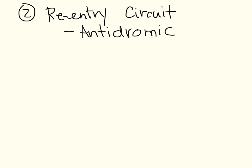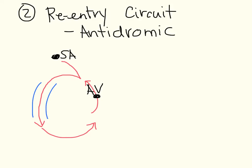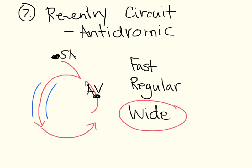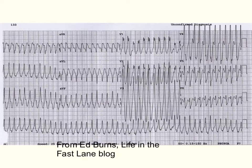The second, less common form is antidromic conduction, where the accessory pathway conducts the normal way and then goes up through the AV node. The rate would still be fast since there is still a circuit going around. It would also be regular. Since the accessory pathway doesn't follow the regular conduction pathway, it will create a wide QRS complex — as we saw even in sinus rhythm. The ECG would look fast, regular, and wide.